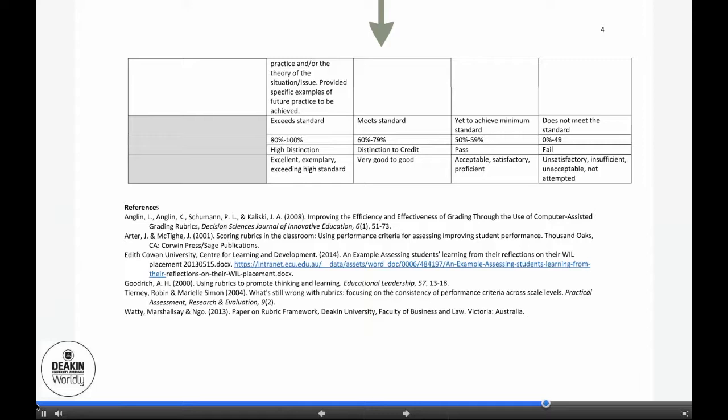Here we have the last bit of the rubric that showcases exceed standard, meets standards, and the high distinction, distinction to credit, pass, etc., which is aligned to the levels and criteria that students would have met for this assessment example. There's also a list of references here that helped me create this rubric based on the Four Rs model. Please feel free to follow those in more detail when you have time.